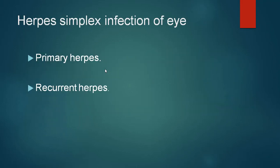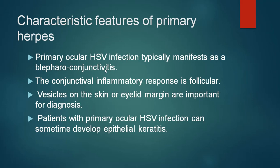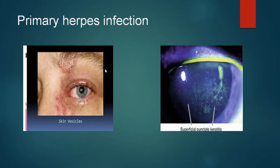Herpes simplex infections of the eye could either be primary herpes or recurrent herpes. The characteristic features of primary herpes include blepharoconjunctivitis, which is the typical manifestation, and the response in the palpebral conjunctiva is follicular. In addition, there may be vesicles on the skin of the eyelid margin and rarely the patient has epithelial keratitis. Here you can see vesicular lesions on the skin and lid margin, and on the other side a cornea with multiple areas of fluorescent staining — punctate areas that could be because of primary herpes infection.